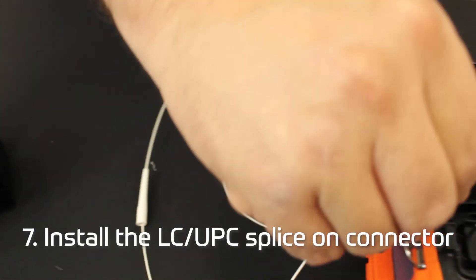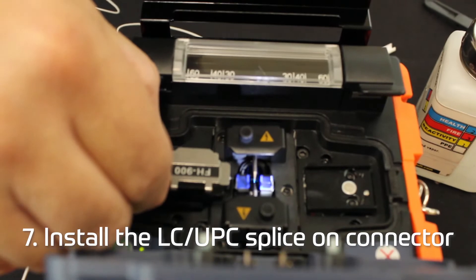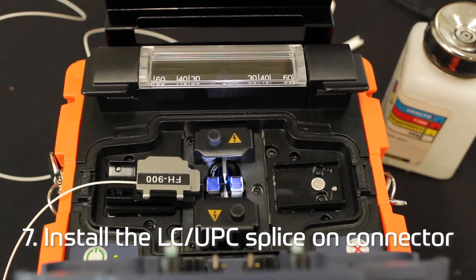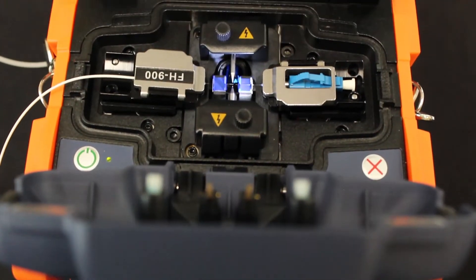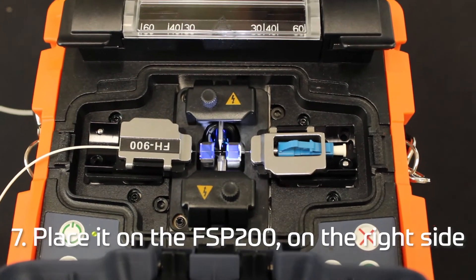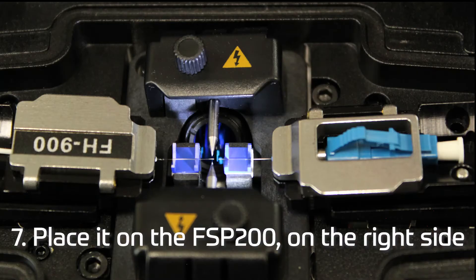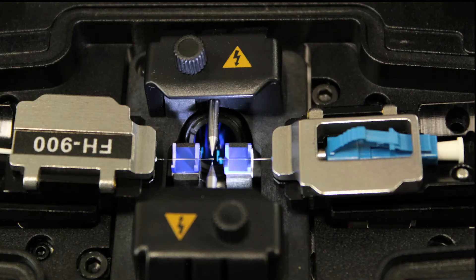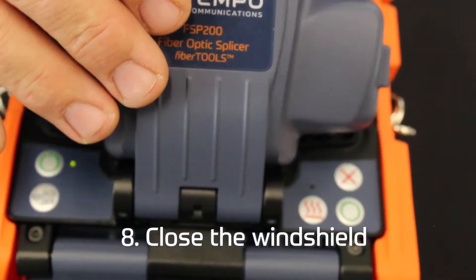Install the LC-UPC splice-on connector into the supplied splice-on connector adapter. Place the splice-on connector into the FSP200 on the right-hand side. Close the windshield.